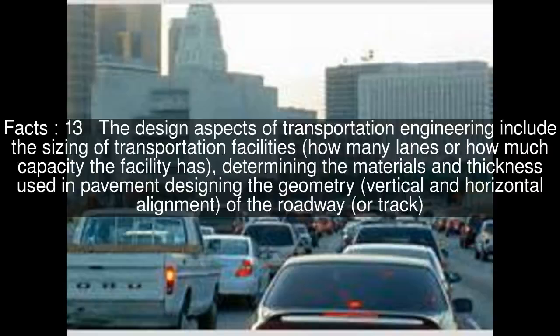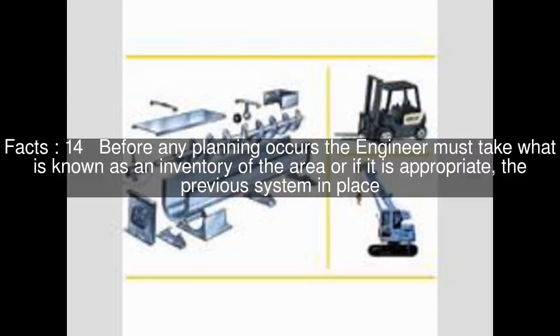The design aspects of transportation engineering include the sizing of transportation facilities — how many lanes or how much capacity the facility has — determining the materials and thickness used in pavement, designing the geometry including vertical and horizontal alignment of the roadway or track. Before any planning occurs, the engineer must take what is known as an inventory of the area, or if appropriate, the previous system in place.